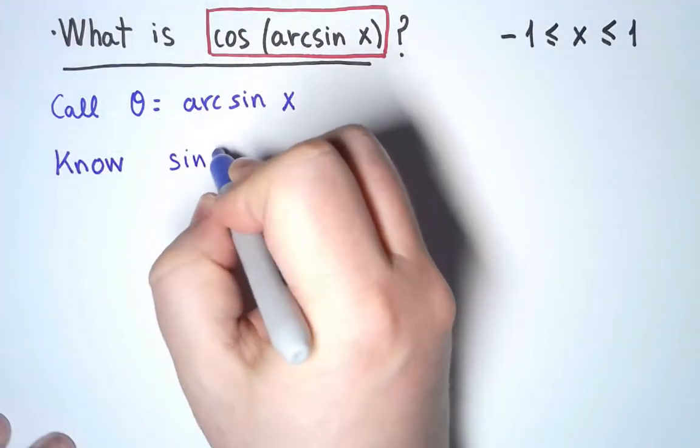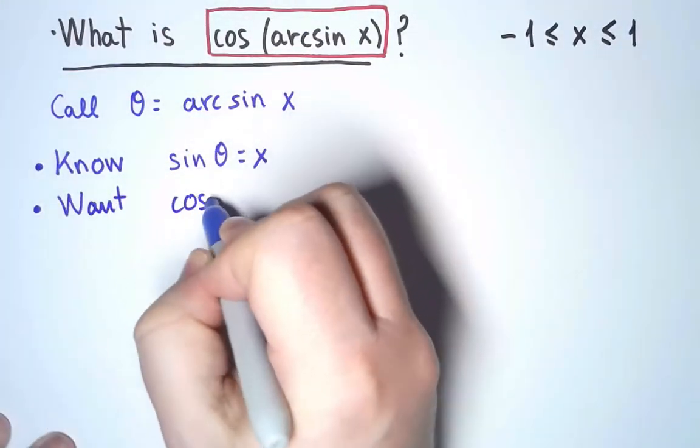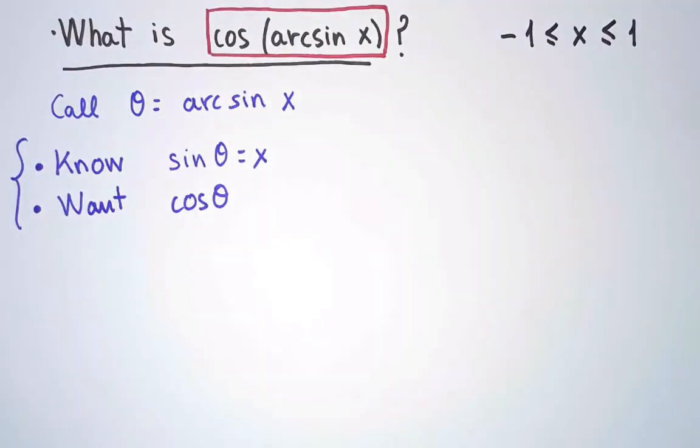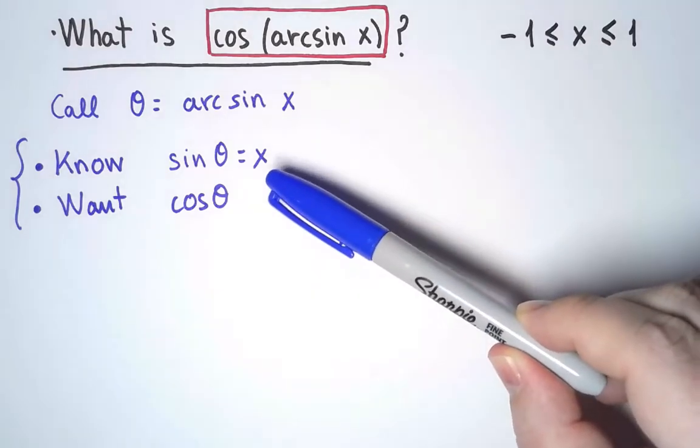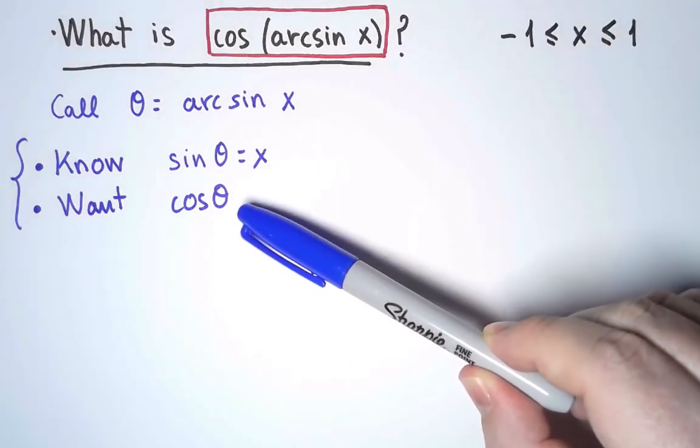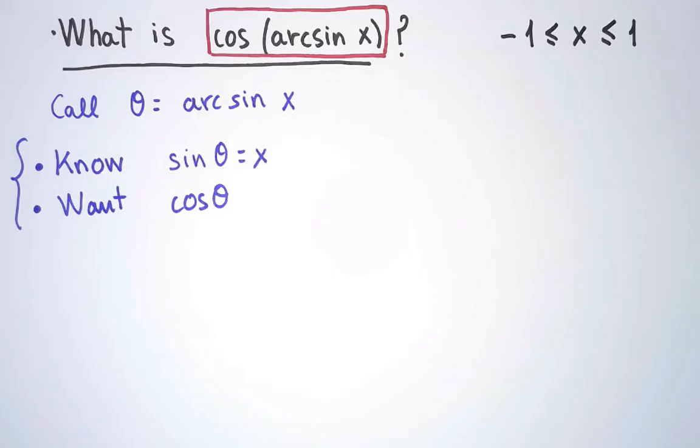Then, sine of θ is x, and I am looking for cosine of θ. Once I put it this way, I see that this is a problem in trigonometry. I know sine of the angle θ, and I want to write cosine of the same angle θ. There are various ways to do this, with trig identities, drawing right triangles, looking at the unit circle. I am going to use a trig identity.